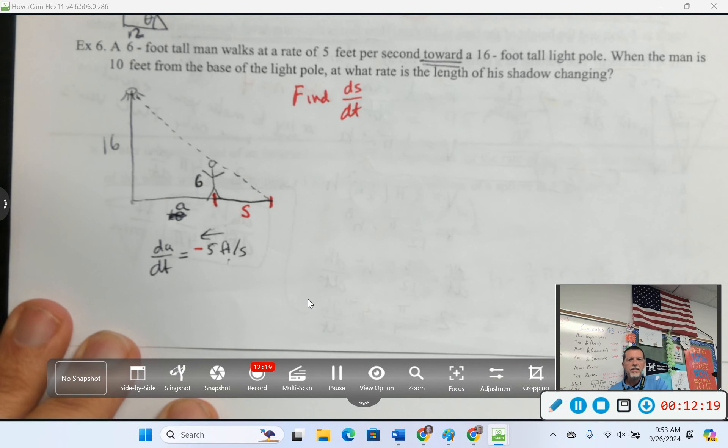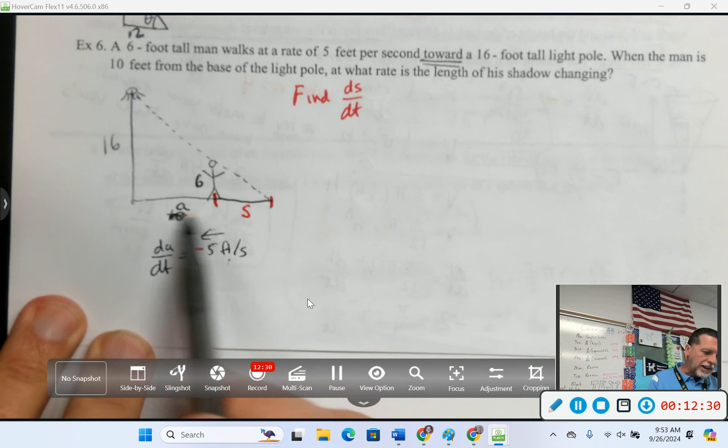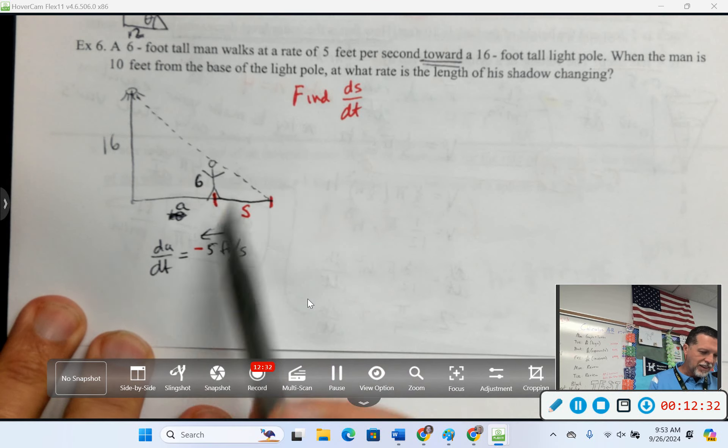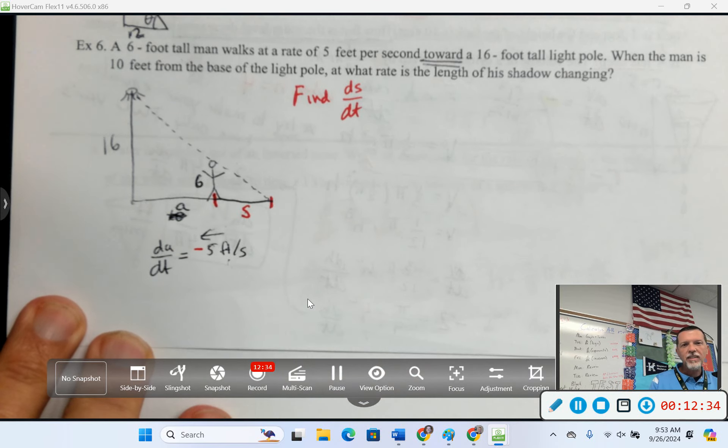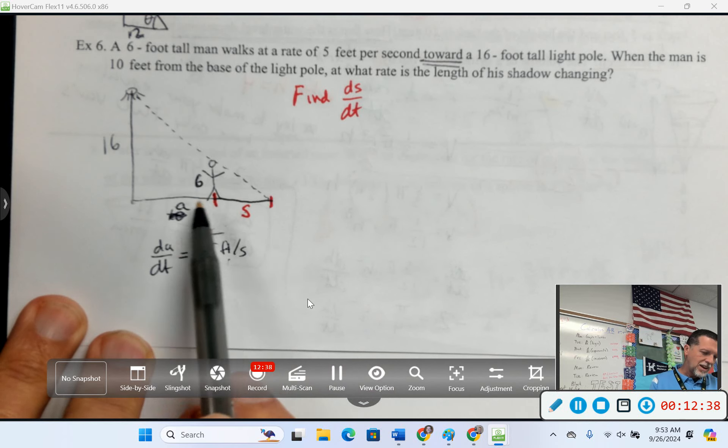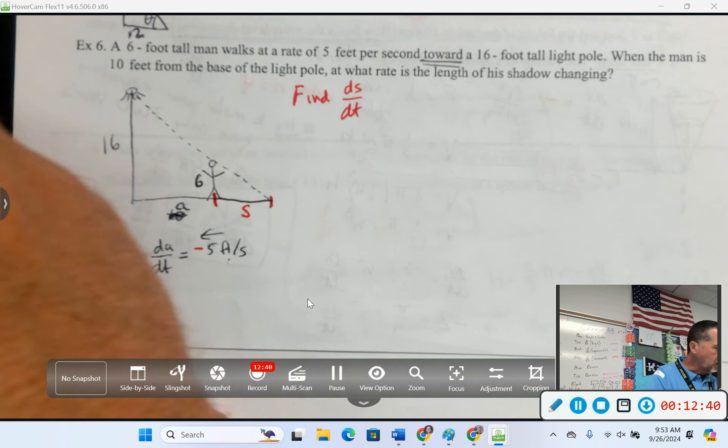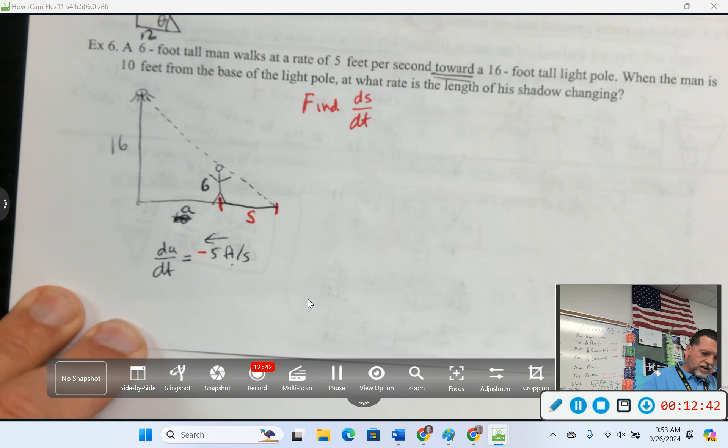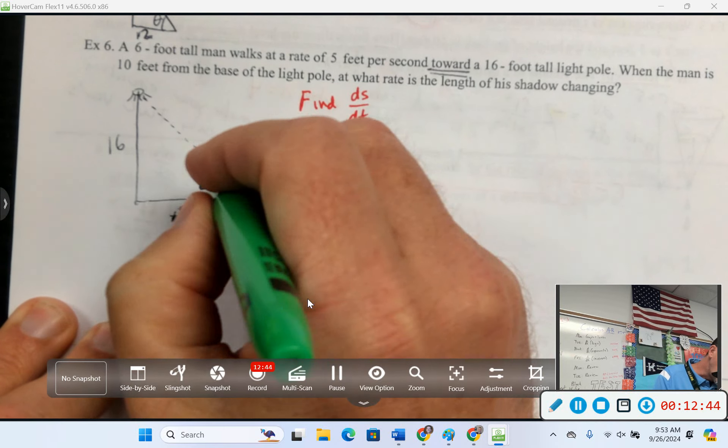My man is not changing height. The light pole is not changing. A is changing. S is changing. And we want to find dS/dt. But I need some equation that relates A and S. Because I know dA/dt. I want to find dS/dt. Well, it looks like there are similar triangles. Speaking of geometry.